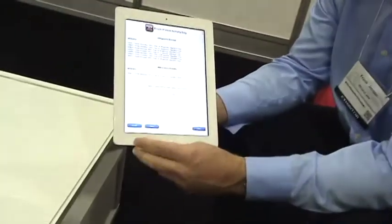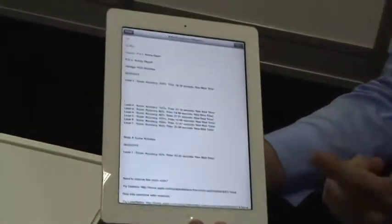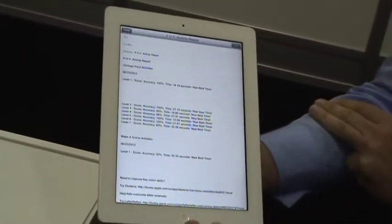So how do I get this report? The report is automatically generated in the app. And then you can choose to email that report to parents, administrators, teachers, therapists, wherever you want to go.